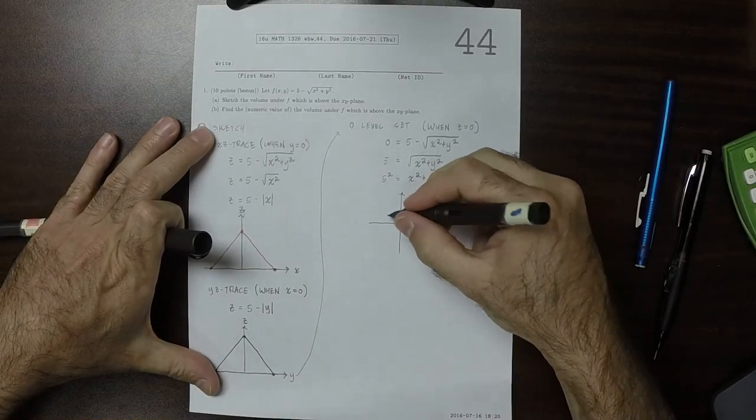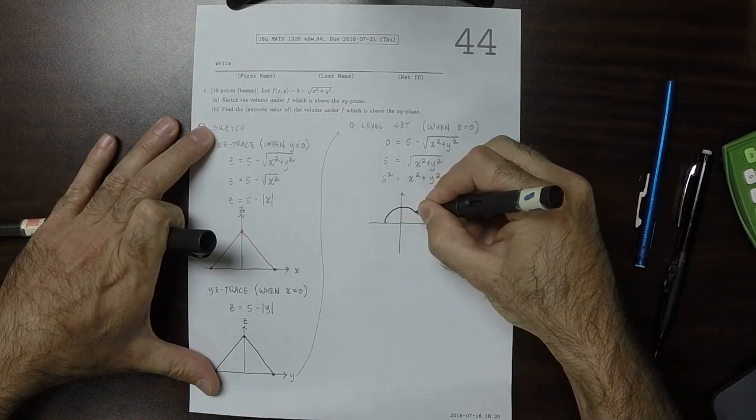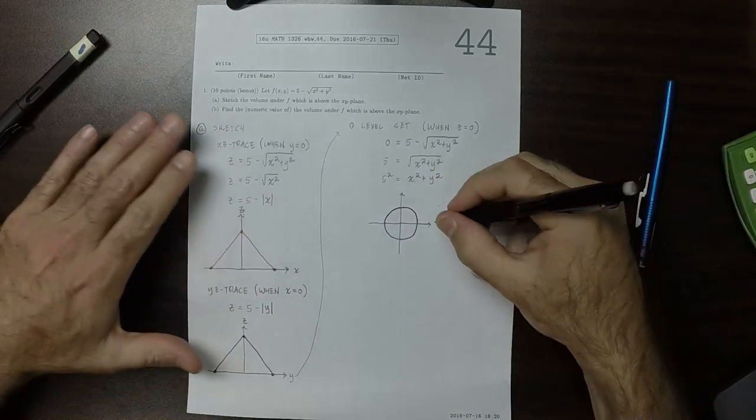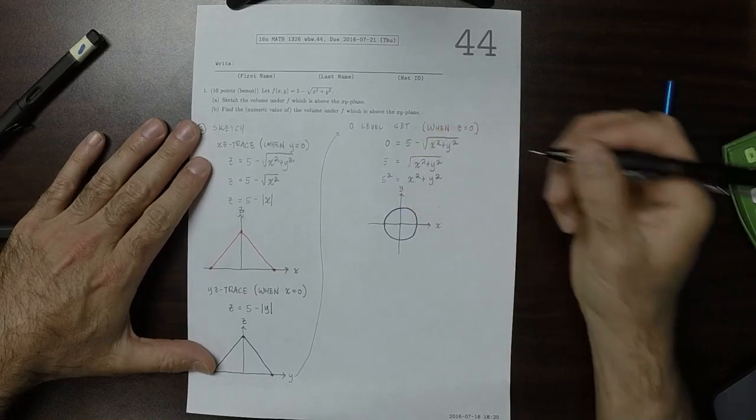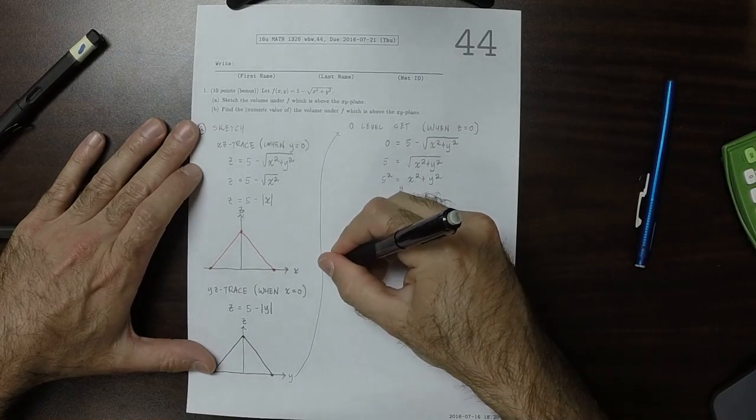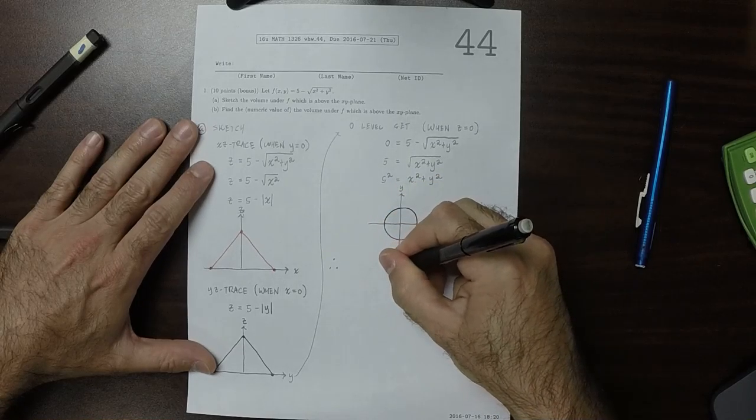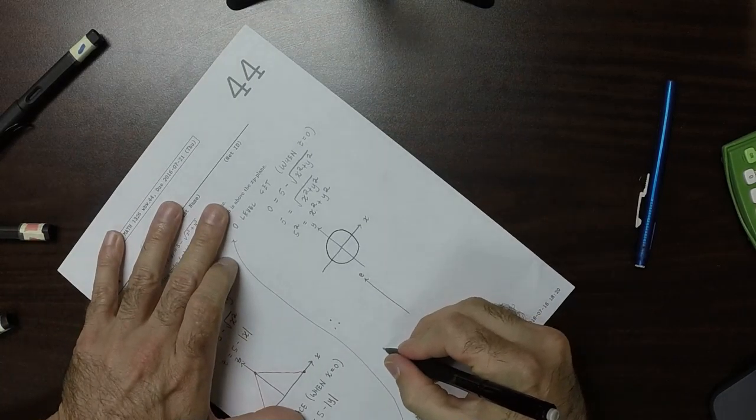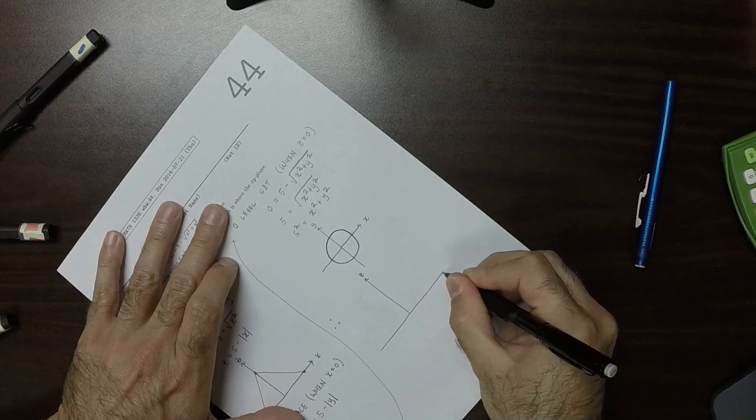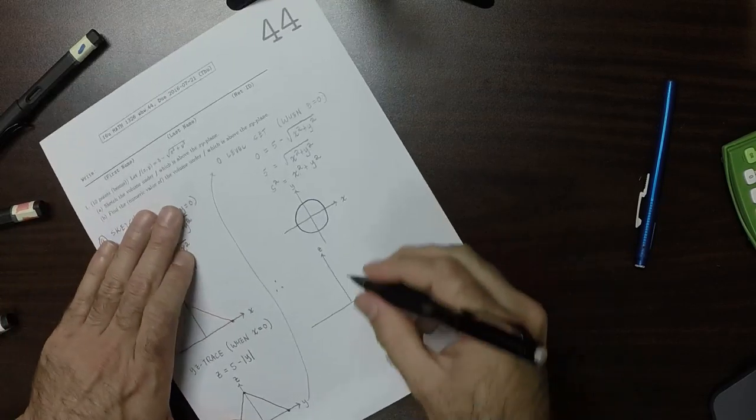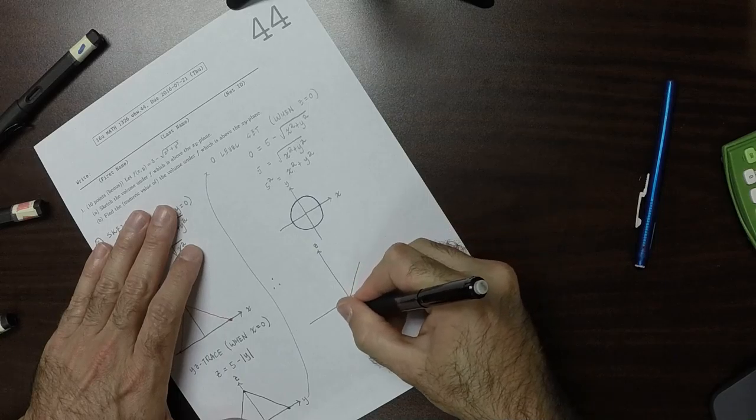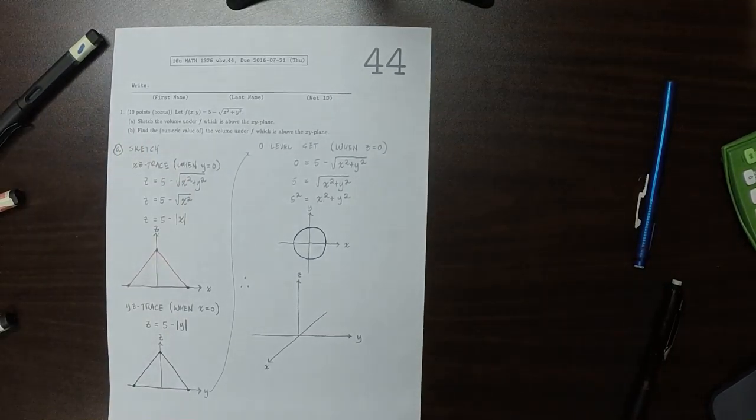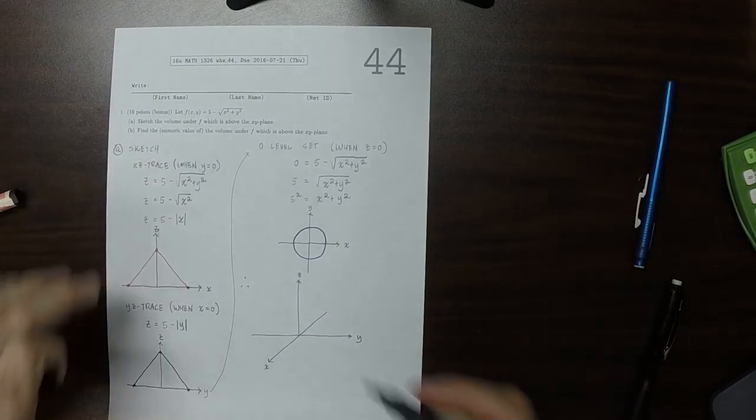So this is not at the same scale as the other ones. It would look like this in the xy plane. Combining these all together, the picture looks like this. The blue circle is in the xy plane.